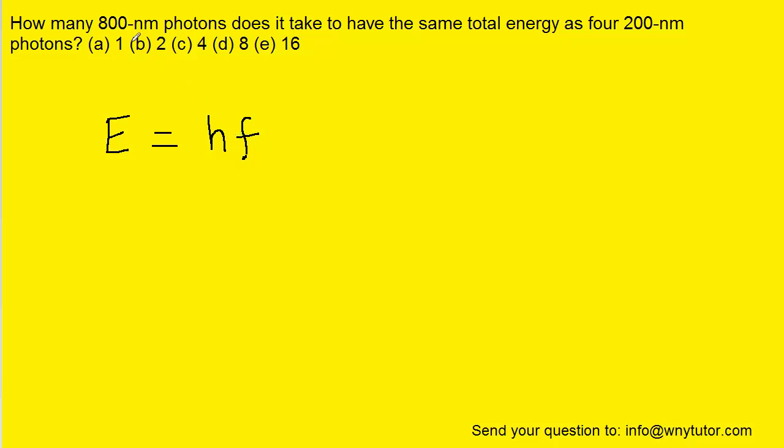This question is giving us information about the wavelength, and so we want to rewrite the equation in terms of wavelength rather than frequency. To do that, we can recall that frequency is equivalent to the speed of light divided by the wavelength, so we can make a substitution just like this.